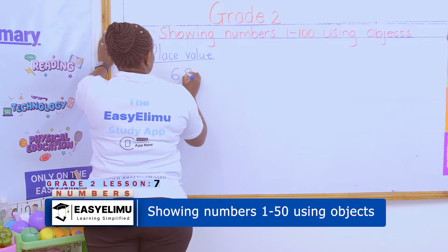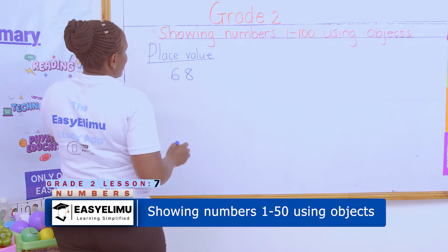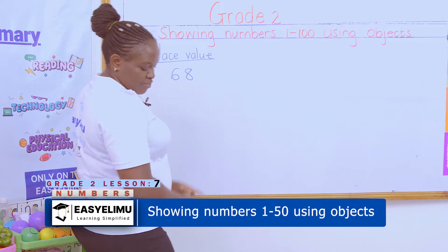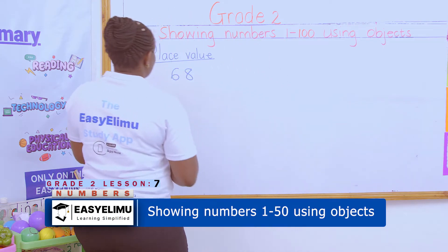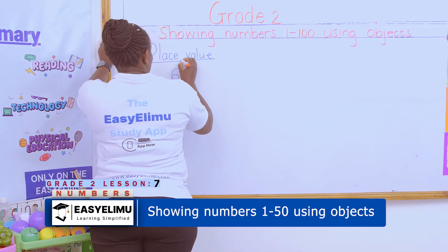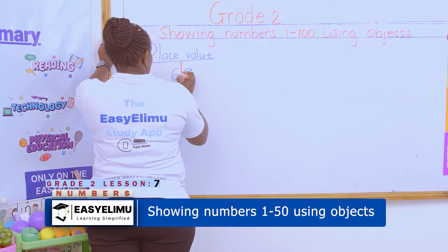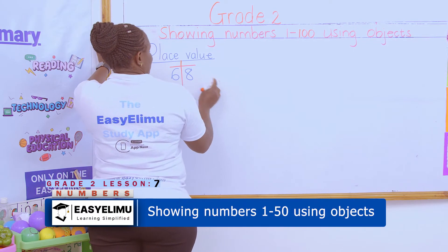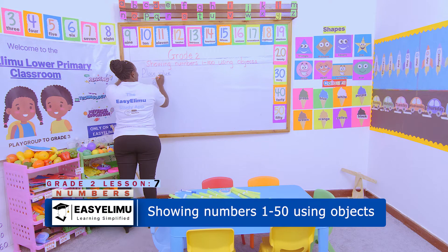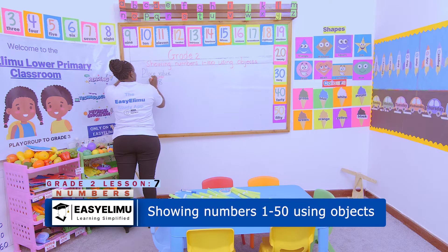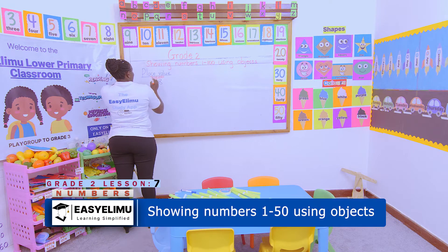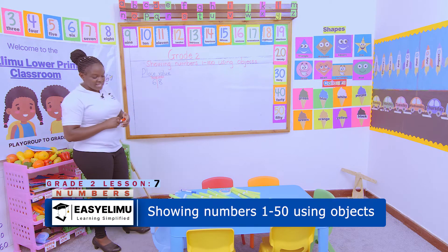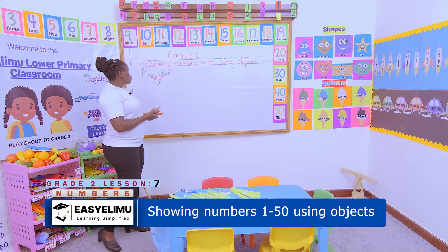First, know the place value of that number. I'm told: can you show number 68 using bundles of sticks? So first of all, ask yourself how many ones and how many tens are in this number. There are eight ones and six tens.